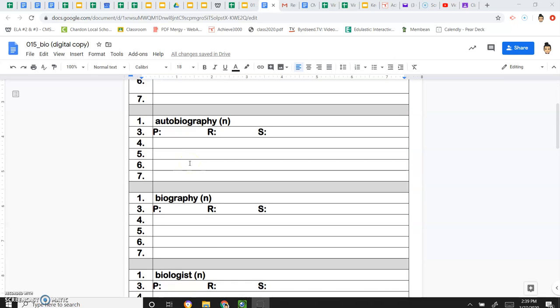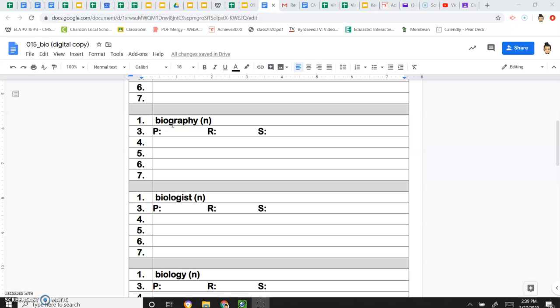We've talked about an autobiography, which is the story that's written down by a person about his or her own life. We've done biography, which is the story of someone's life written by somebody else.